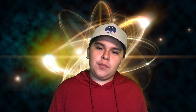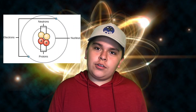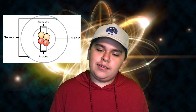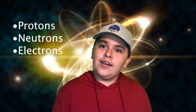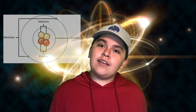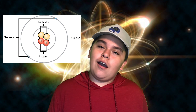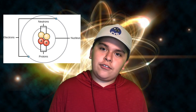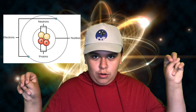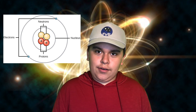When you shrink something down, eventually you'll reach an atom. An atom is composed of three particles called hadrons. These particles are protons, neutrons, and electrons. Protons and neutrons are in the center of the atom and they form the nucleus, while the electrons orbit the center of the atom.